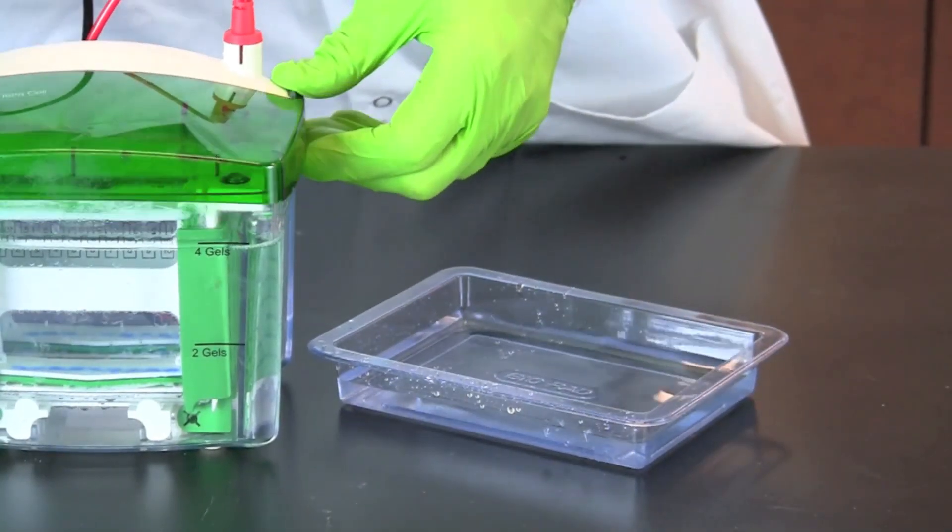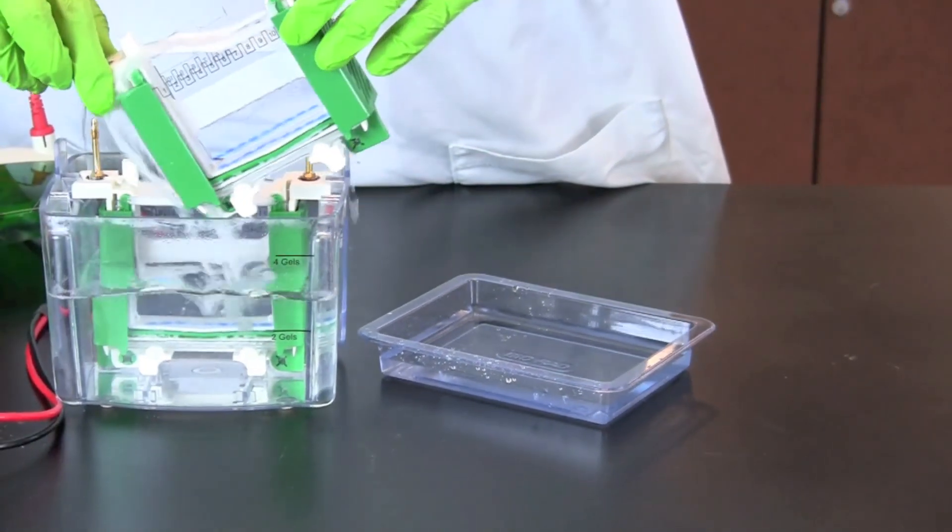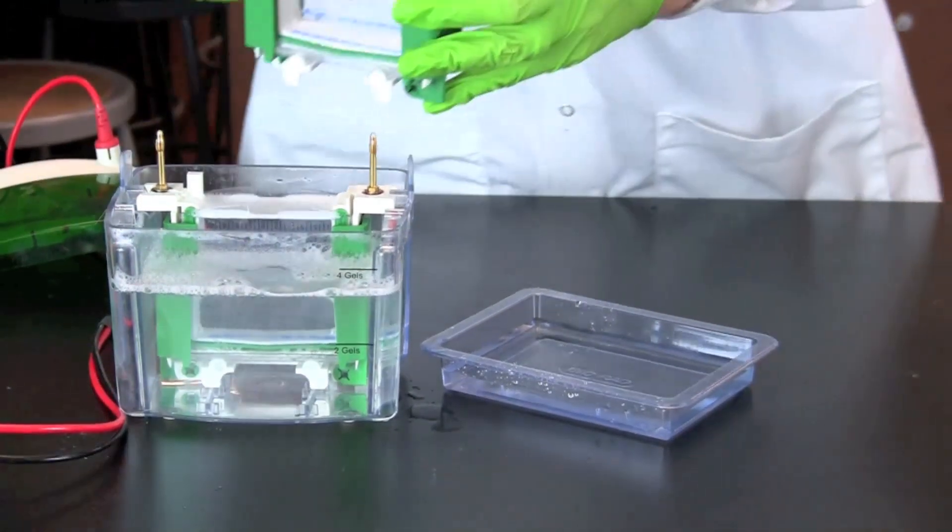When the electrophoresis is complete, turn off the power and remove the lid from the chamber. Remove the electrode assembly and pour the buffer from the inner chamber back into the tank.